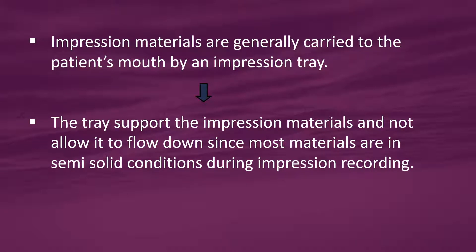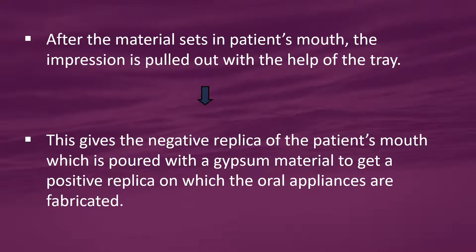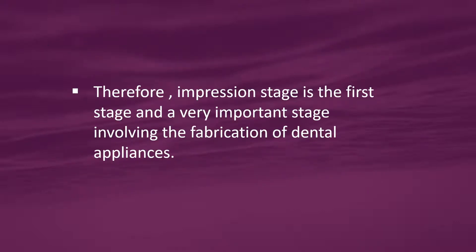The impression materials are generally carried to the patient's mouth by an impression tray. The tray supports the impression material and does not allow it to float down, since most of the materials are in semi-solid conditions during impression recording. After the material sets in the patient's mouth, the impression is pulled out with the help of the tray, giving a negative replica of the patient's mouth, which is then poured with a gypsum material to get a positive replica on which oral appliances are fabricated.